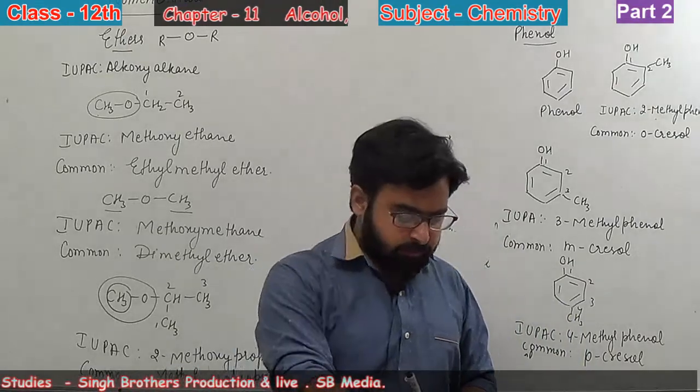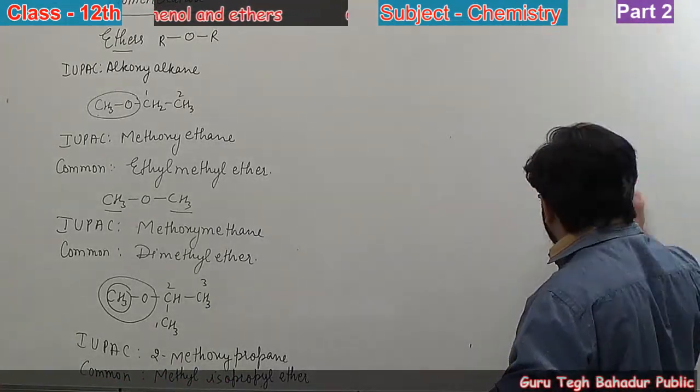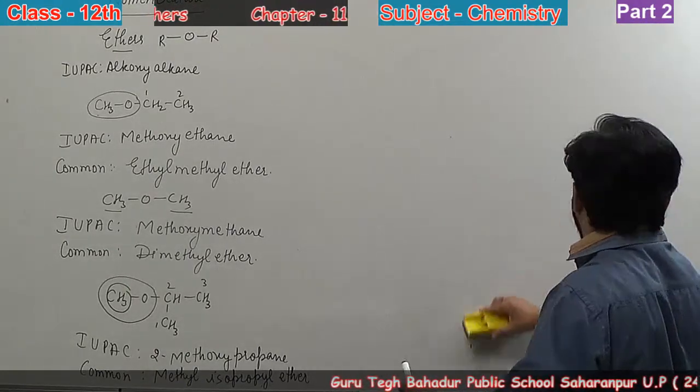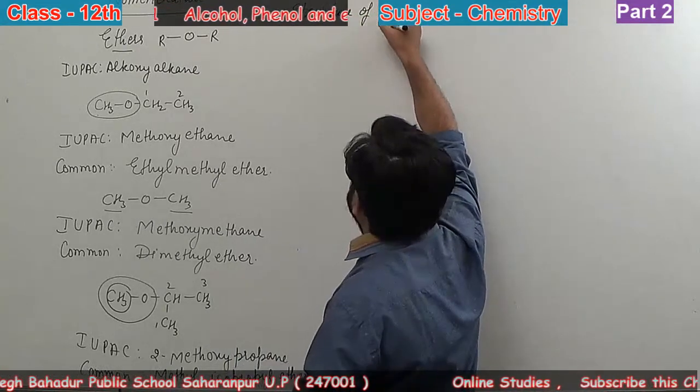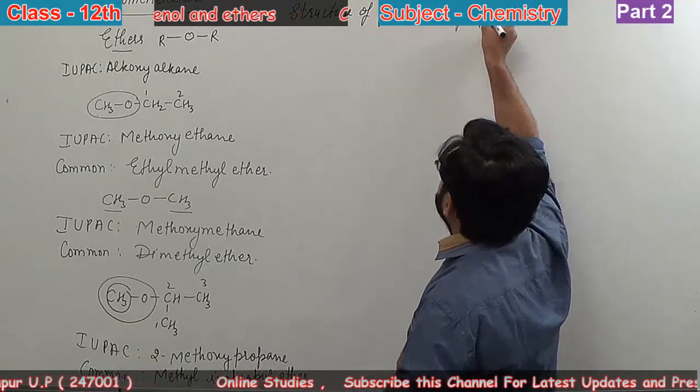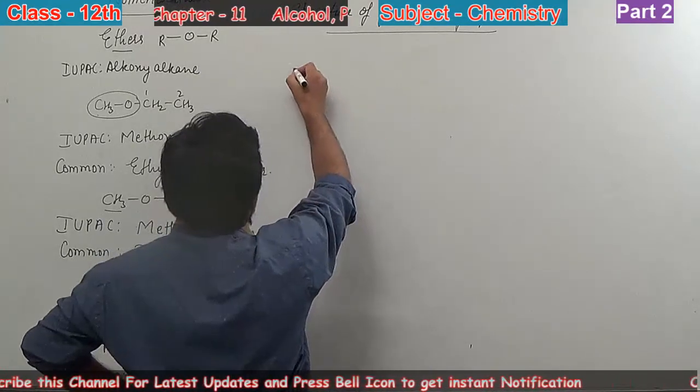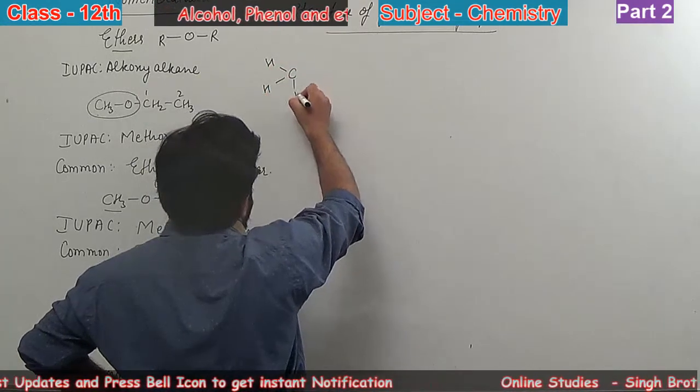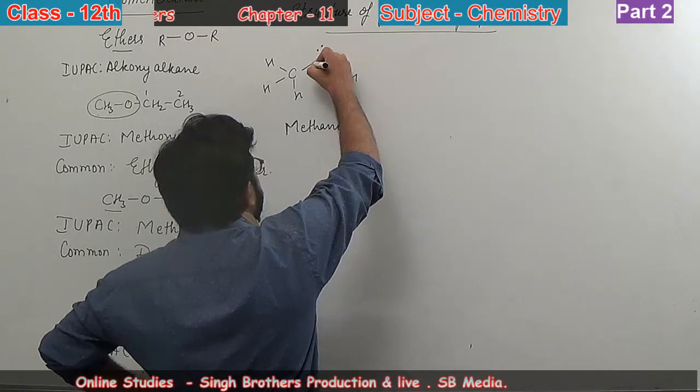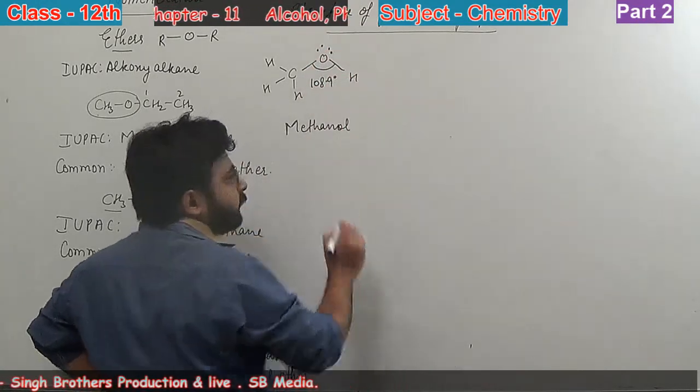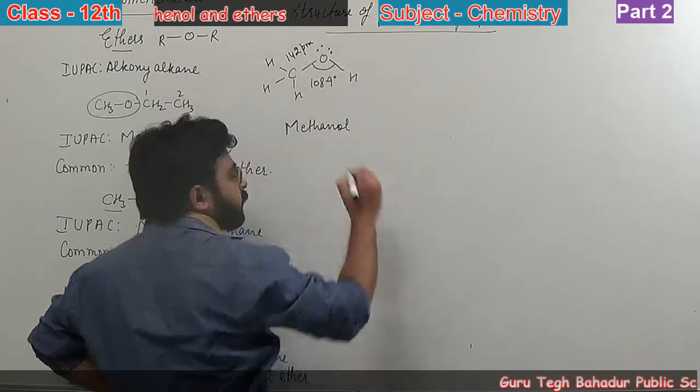Now we will move to structures of functional groups. Let us see. Today I will discuss structures. First, methanol: CH3-OH. Oxygen has lone pairs. This angle is 108.9 degrees. The bond length is 142 picometer.